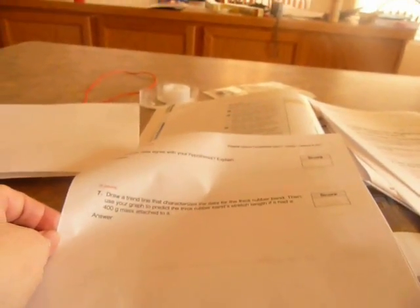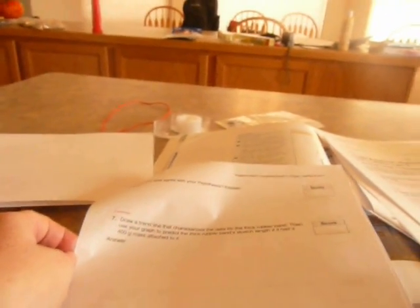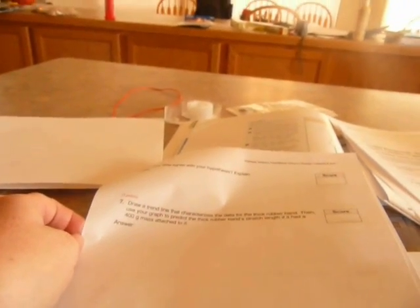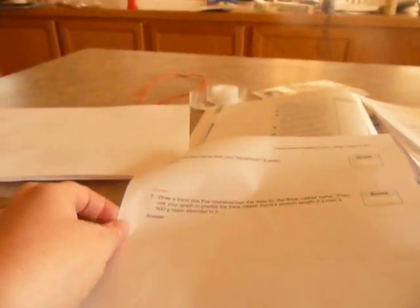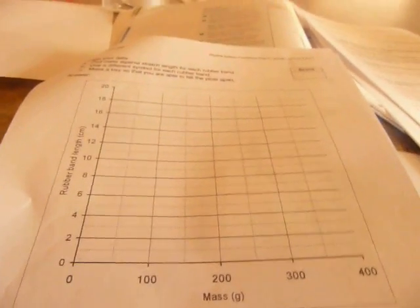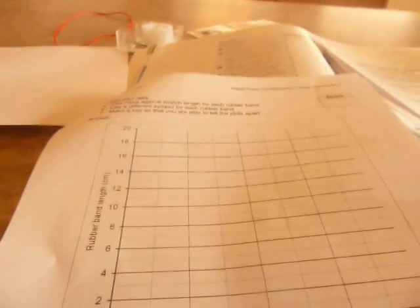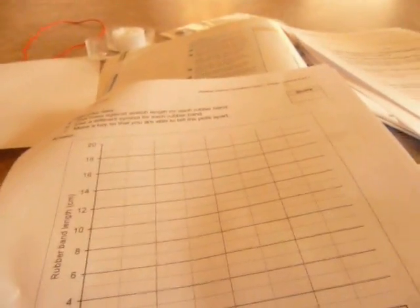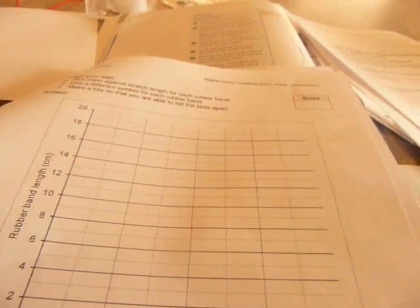And then number seven, draw a trend line that characterizes the data for the thick rubber band. And then use your graph to predict the thick rubber band's stretch length if it had a 400 gram mass attached to it. So remember we talked about best fit lines earlier on in another lab? You're going to look at your thick rubber band data, and you are going to draw a straight line that is the best fit between your three data points. And then you're going to extend that line and make a good guess where it would have been if you added 400 grams to it.